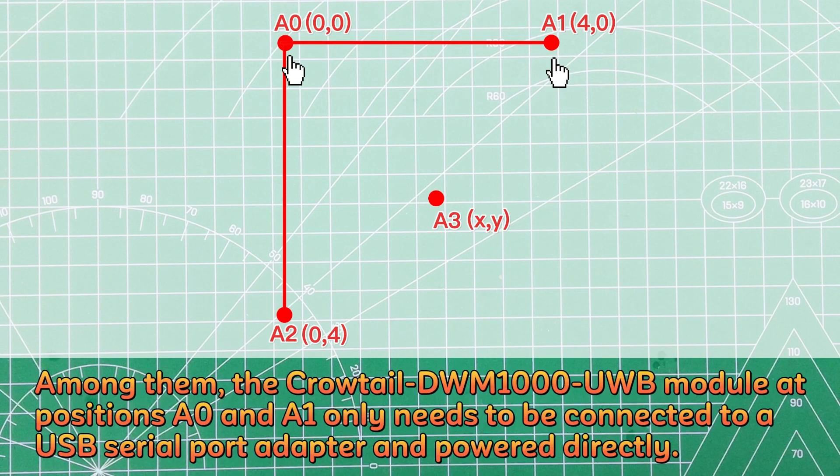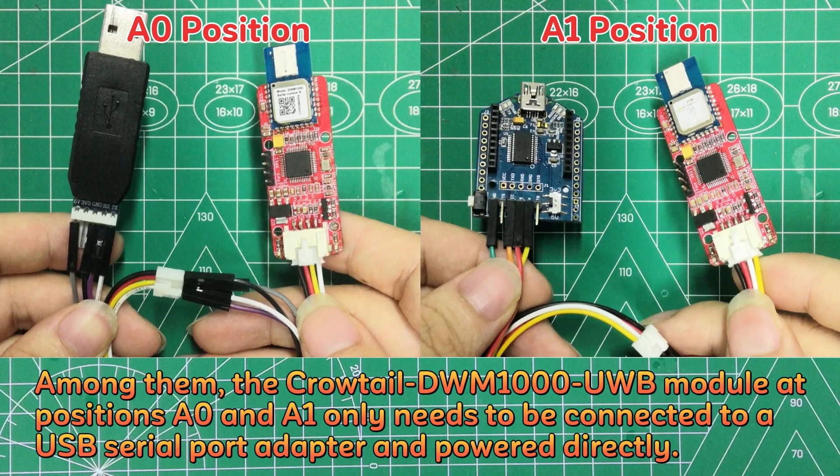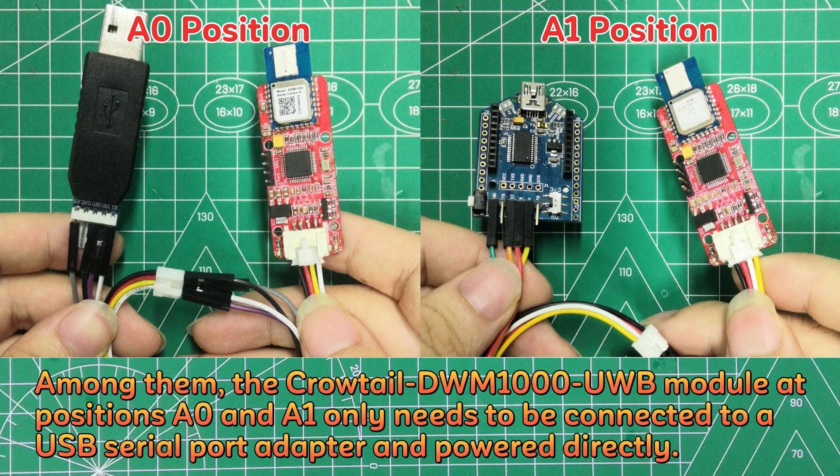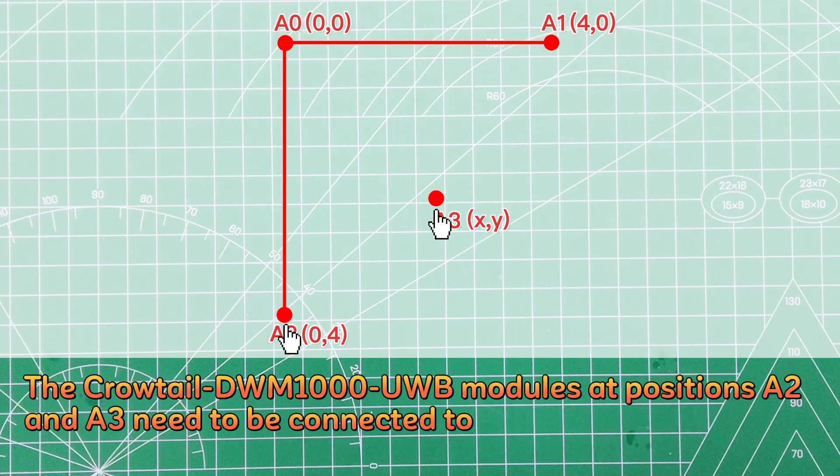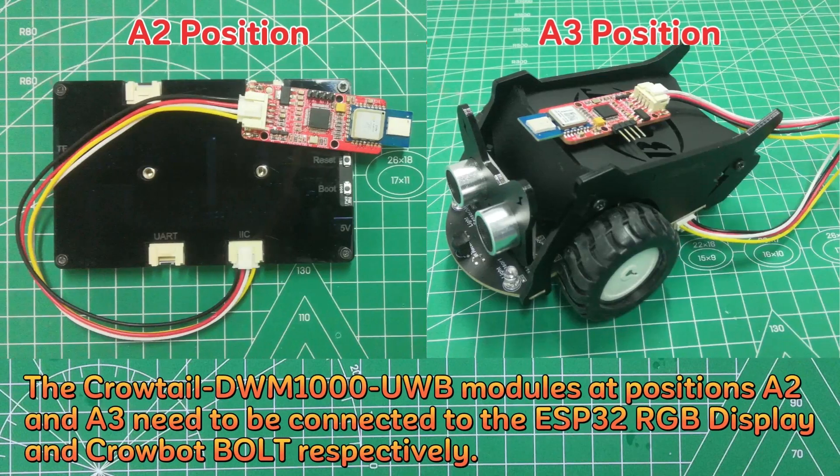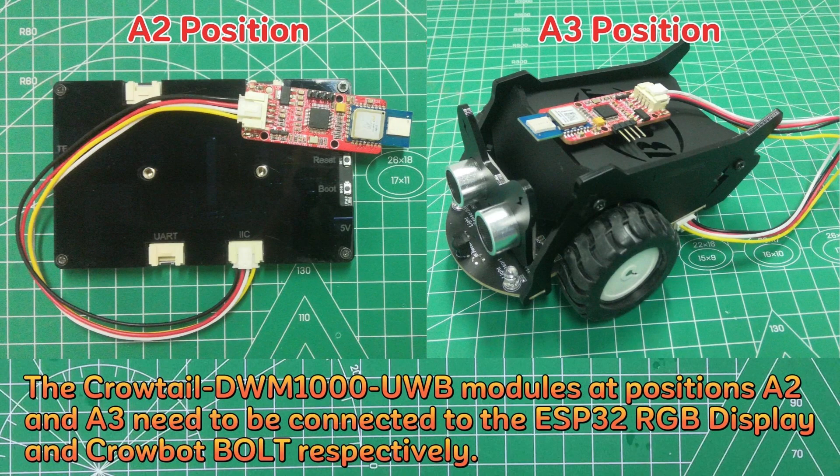Among them, the Crowtail DWM-1000 UWB module at positions A0 and A1 only needs to be connected to a USB serial port adapter and powered directly. The Crowtail DWM-1000 UWB modules at positions A2 and A3 need to be connected to the ESP32 RGB display and Crobot bolt, respectively.